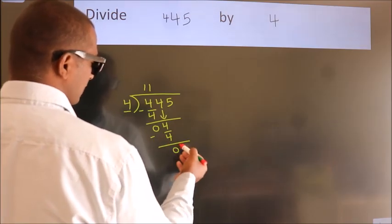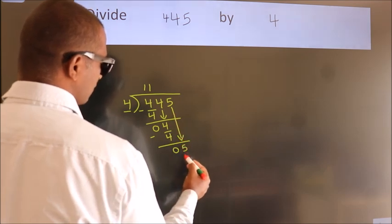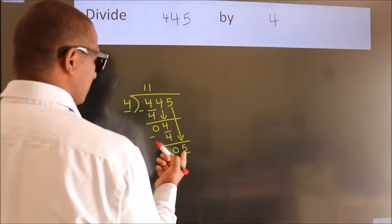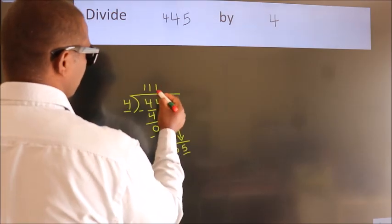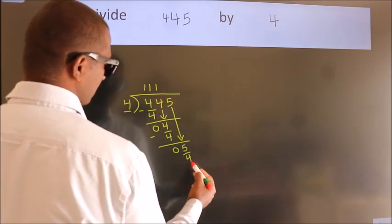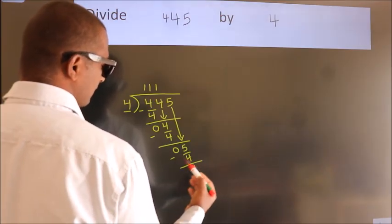After this, bring down the beside number. So 5 down. So 5. A number close to 5 in the 4 table is 4 once, 4. Now we subtract. We get 1.